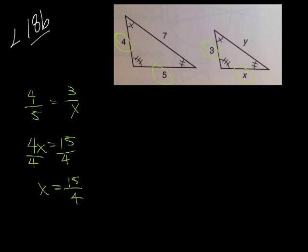And I get 15 over 4. Now that's not very pretty, but that's what we end up getting. So x is 15 over 4.